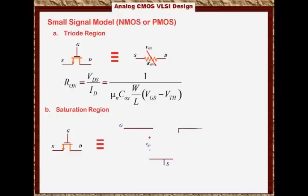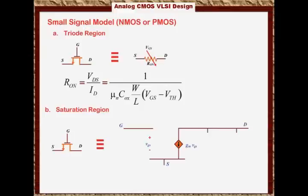Here is the drain, and from the drain to the source there will be a dependent current source. This dependent current source equals G_M times V_GS. So this current source depends on a parameter called G_M — the transconductance of the transistor — times V_GS, which is the voltage from the gate to the source.